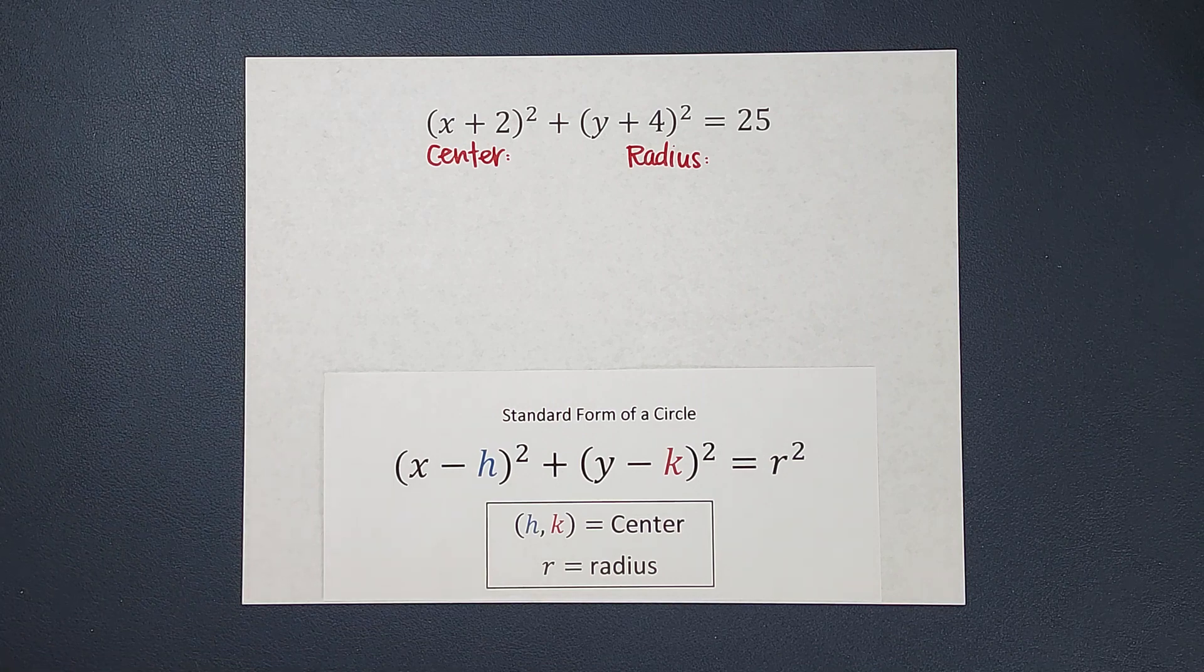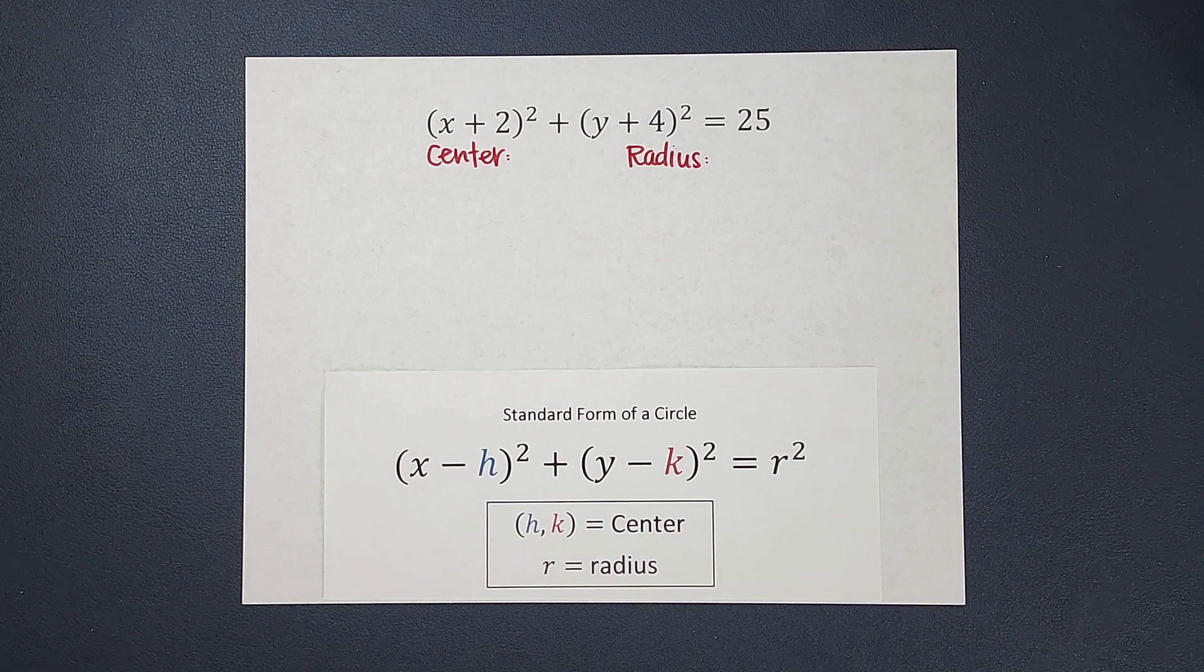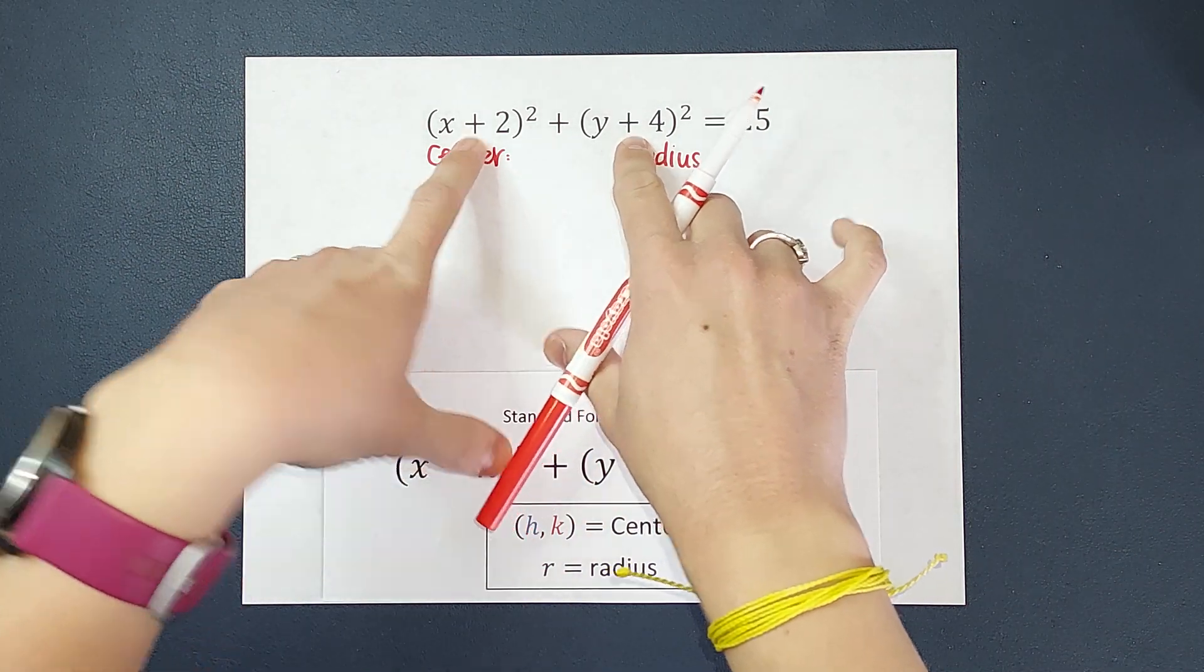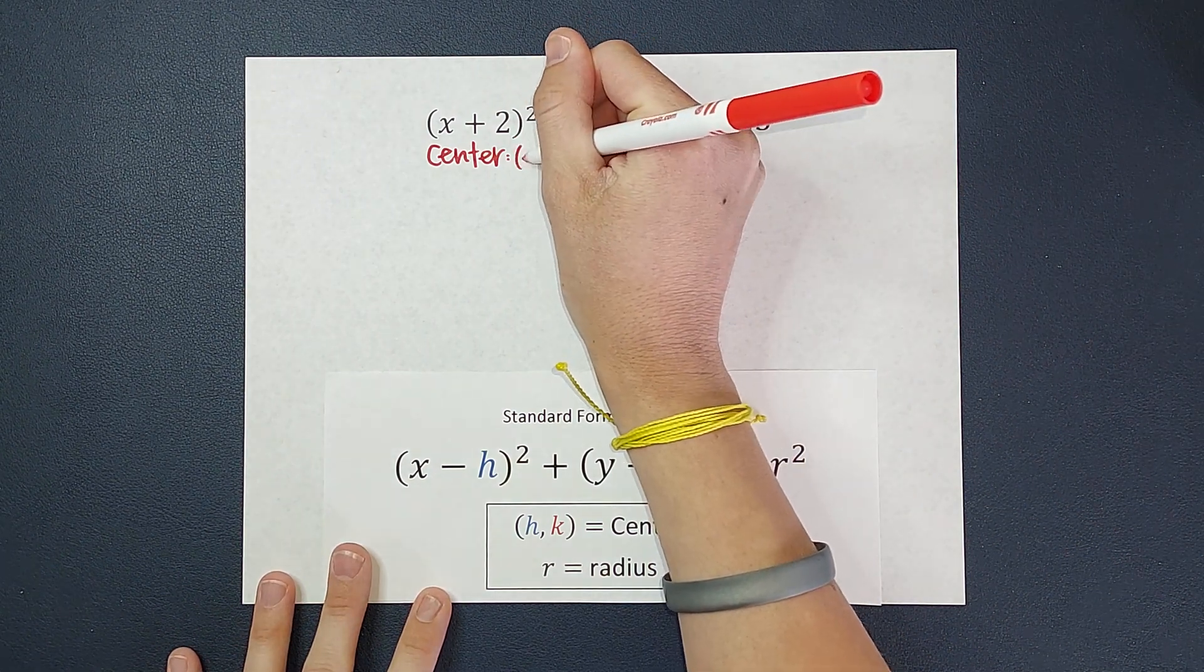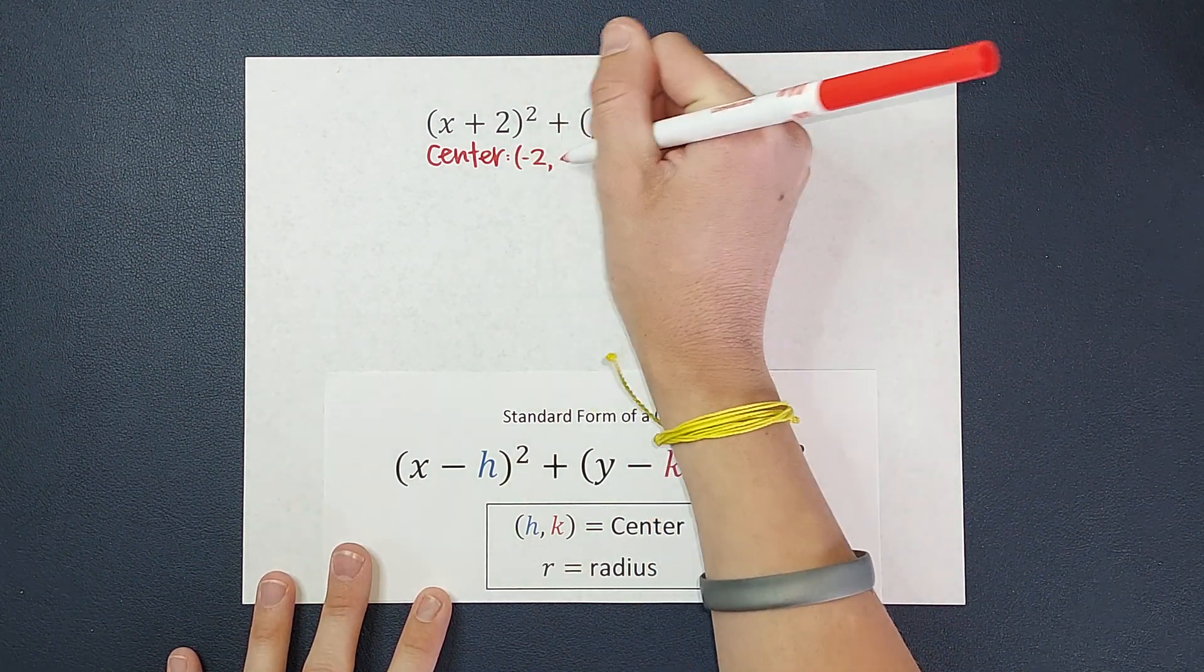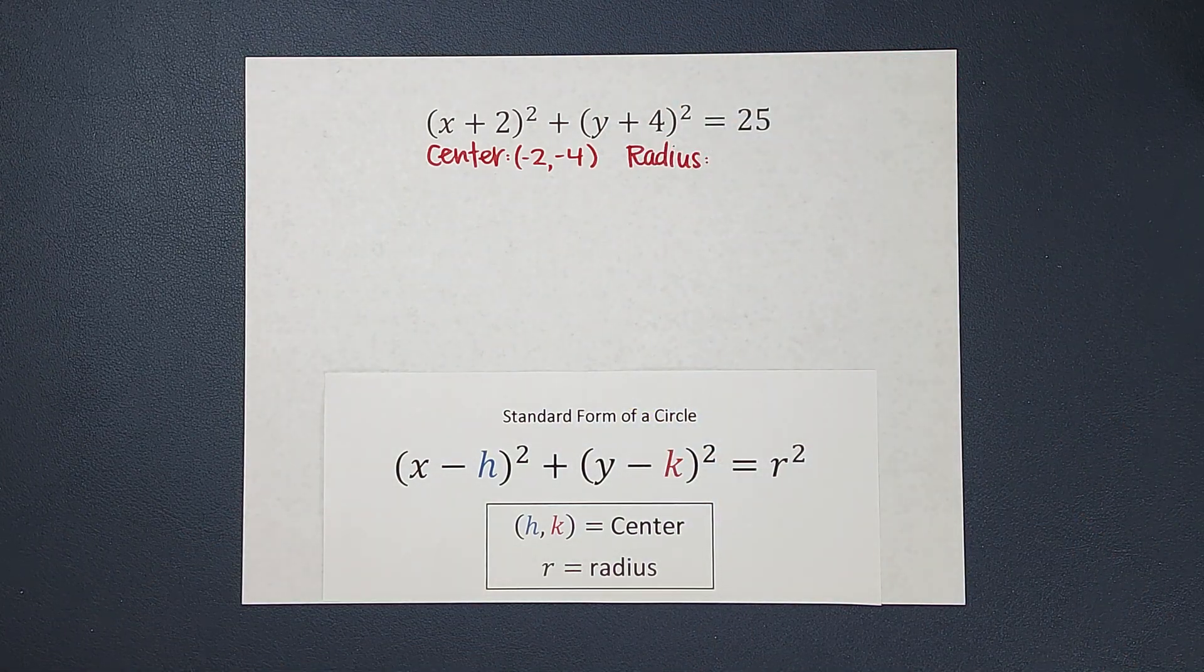So my center here is going to be this h and k and remember we switch the sign. So here they're both positive. So for my center, they're actually going to be both negative. So I'm going to have negative two, negative four, and that is going to be the center of my circle.